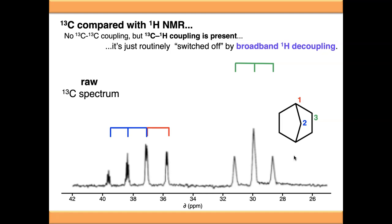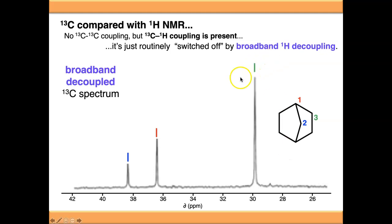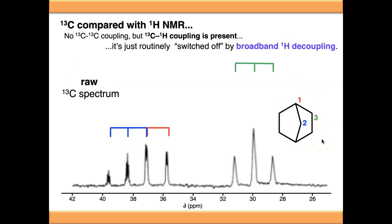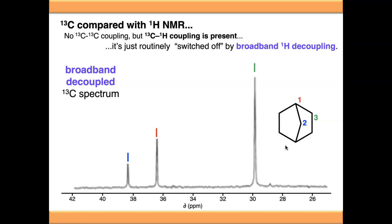If we turn off that decoupling, this is what we see. You can see actually the signals do split out. Here are the three signals correlated onto the chemical environments. If we turn off the decoupling, you can see the splitting actually is there, between the carbon and the proton. Signal one, for instance, has one proton attached to it, and we're getting coupling between this carbon and this proton, giving us a doublet signal here. Whereas the green protons over here—there are two attached to this carbon, so because this carbon is coupling to two protons, we're ending up with a triplet-type pattern. But we routinely turn this off, and pretty much all the carbon-13 spectra you will see will be broadband decoupled as standard.